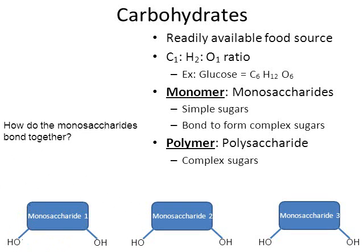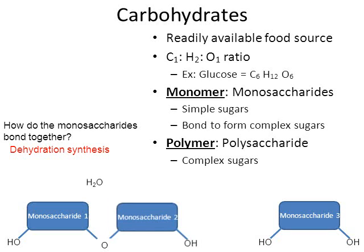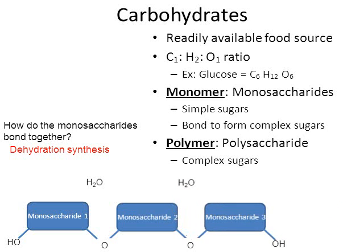How do monosaccharides bond together? Through a process called dehydration synthesis. If something's dehydrated, it's lost water. Between monosaccharide one and two, water is removed, and that removal bonds them together — they're now sharing one of the oxygens. The same thing happens between monosaccharide two and three: dehydration synthesis removes water and bonds monosaccharide three to monosaccharide two, making a larger molecule made from three smaller monosaccharides.